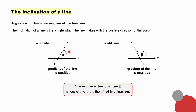The inclination of a line is the angle which the line makes with the positive direction of the x-axis — like acute angle alpha here or obtuse angle beta there. Remember, the tan of the angle of inclination equals the gradient of the line. Therefore, the gradient of this line is positive because it is the tan of an acute angle alpha, and the gradient of this line is negative because it is the tan of an obtuse angle.